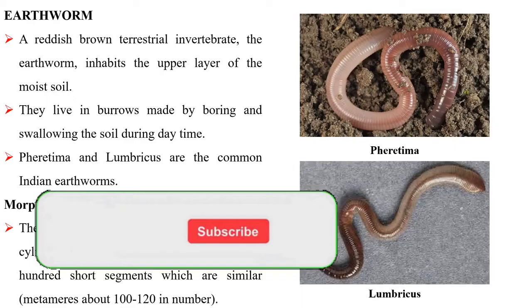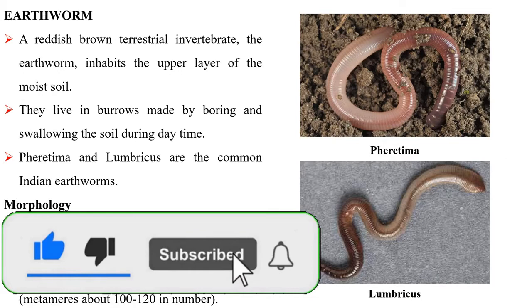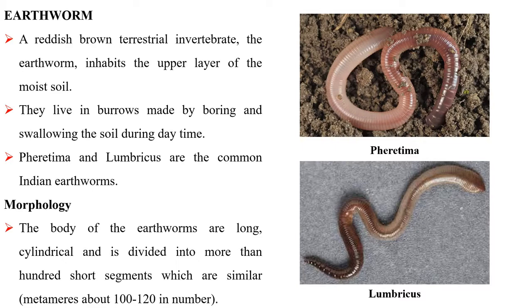Earthworm: A reddish-brown terrestrial invertebrate, the earthworm inhabits the upper layer of the moist soil. They live in burrows made by boring and swallowing the soil during daytime. Pheretima and Lumbricus are the common Indian earthworms. Morphology.